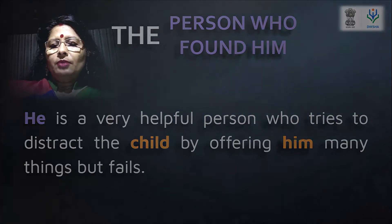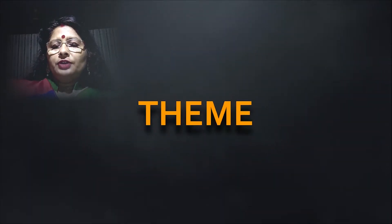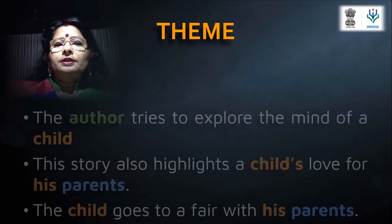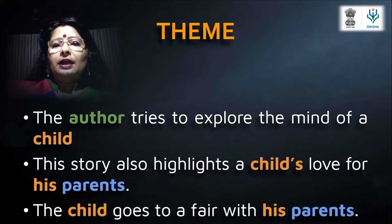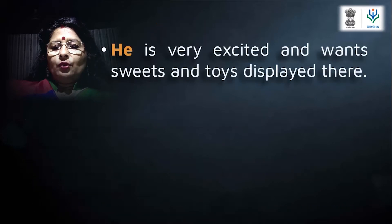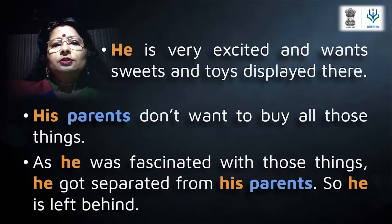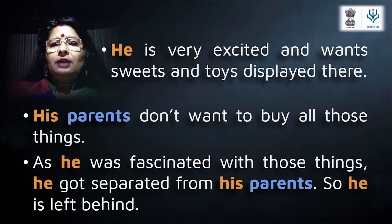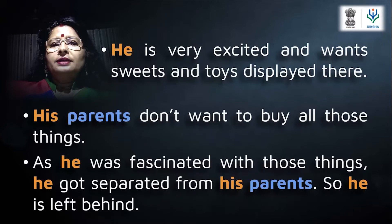When we come to the theme of the chapter, the author tries to explore the mind of a child. This story also highlights the child's love for his parents. The child goes to the fair with his parents, very excited by the sweets and toys displayed here and there. His parents don't want to buy all those things, and as he was fascinated by them, he was separated from his parents and started crying.